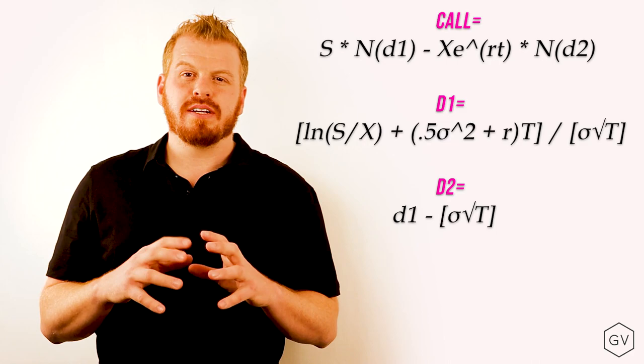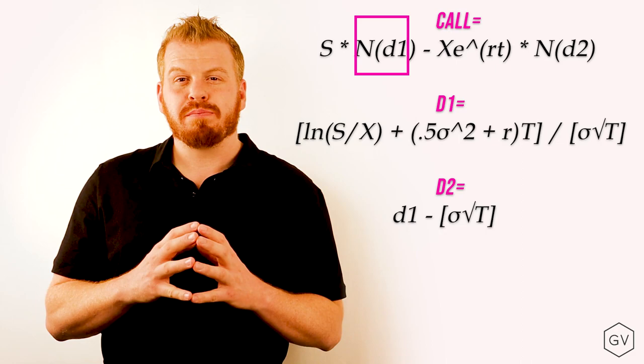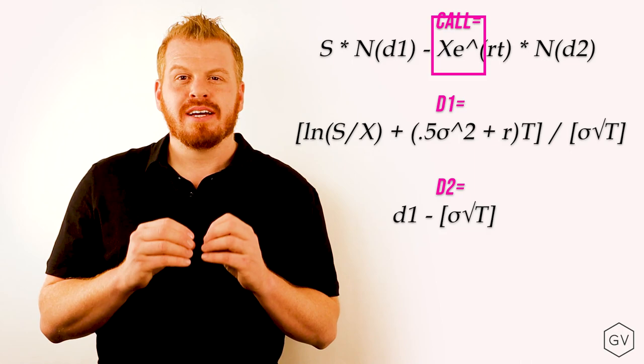Here's the Black-Scholes formula in its whole. We look at the current stock price times the normal distribution probability of D1 minus the present value of the strike price times the normal distribution probability of D2. This formula is for a call option. Let's dig deeper into the formula.